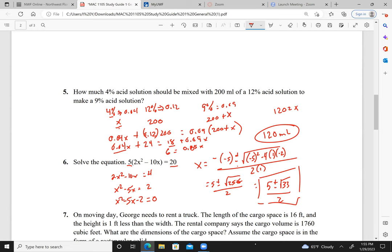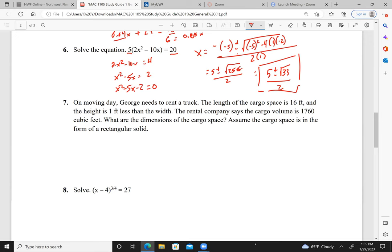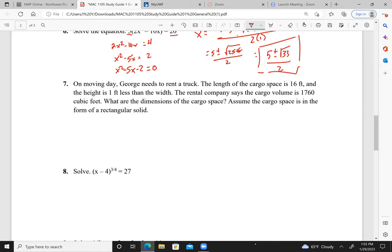And since this is simply a work of the problem, we're not needing to fill it in the real world. Speaking of which, real world. A moving day, George needs to rent a truck. The length of the cargo space is 16 feet. The height is one less than the width, so we let the width be W. The height is W minus 1. A rental company says the cargo volume is 1,760 cubic feet. What are the dimensions of the cargo space? We will assume that it is the form of a rectangular solid.